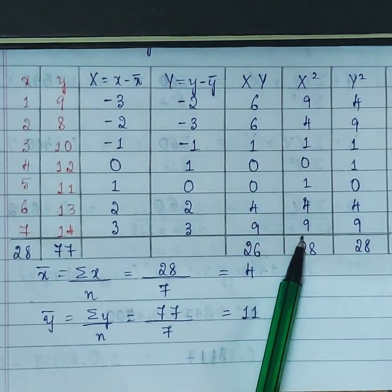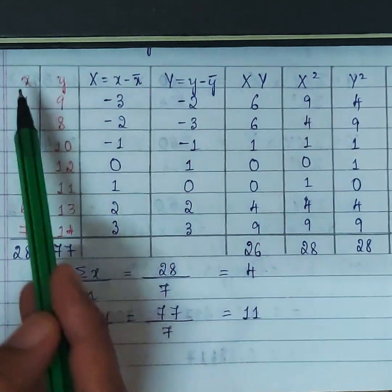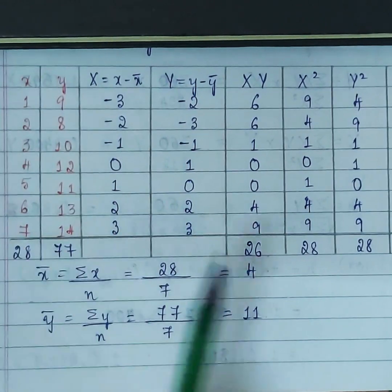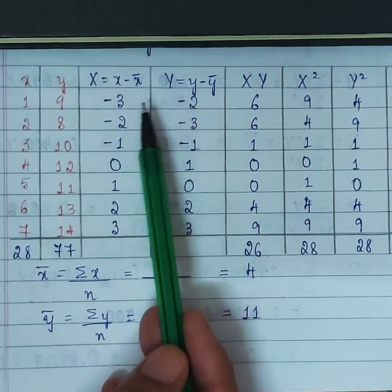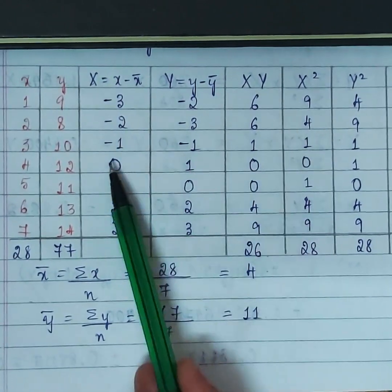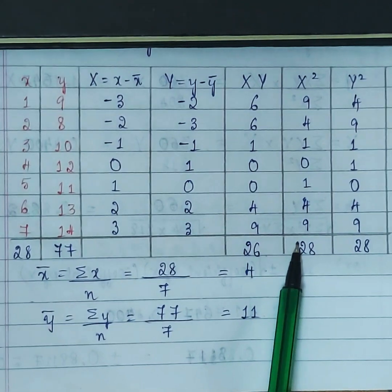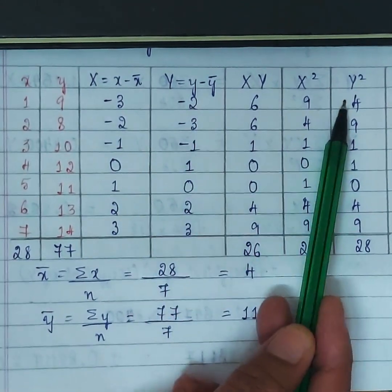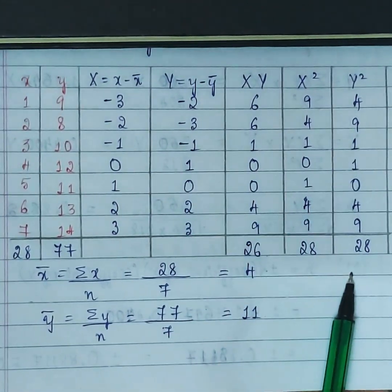Next, we square all Capital X values — not small x. That is why we crossed out the small x. Capital X² values: (−3)² = 9, (−2)² = 4, (−1)² = 1, and so on. Similarly, square all Capital Y values: (−2)² = 4, (−3)² = 9, and so on.